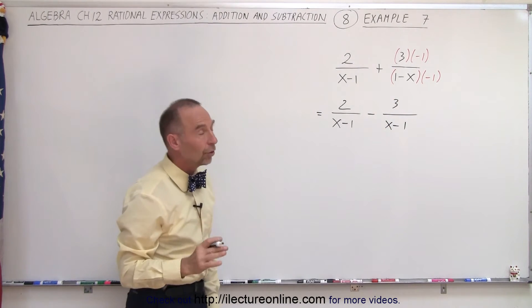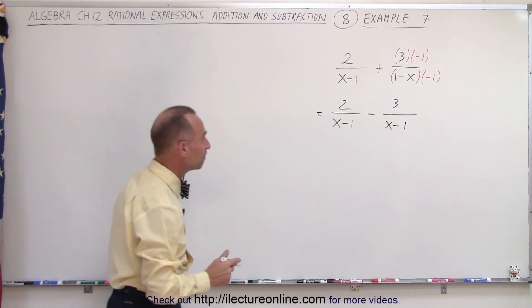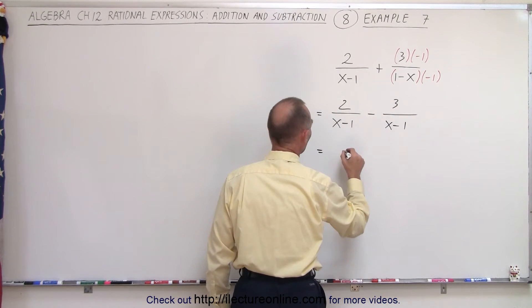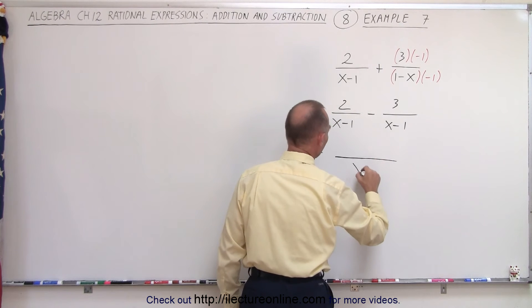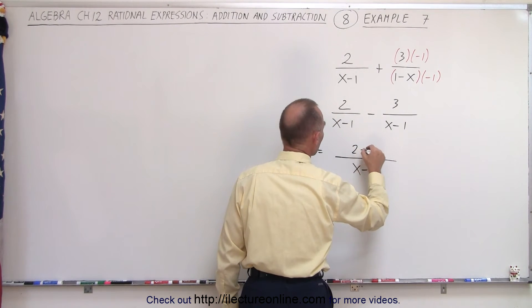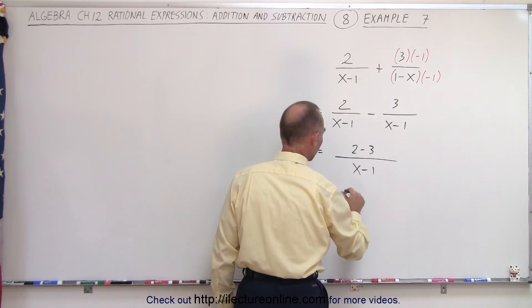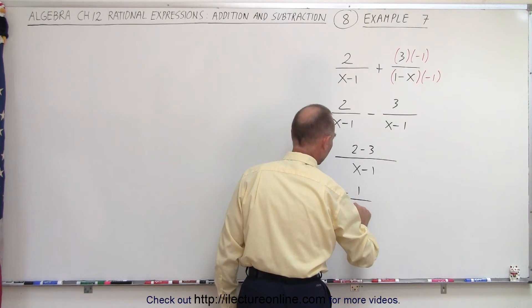And notice the two denominators are now the same. So this can now be written as over the same common denominator of x minus 1, 2 minus 3, or this is minus 1 over x minus 1.